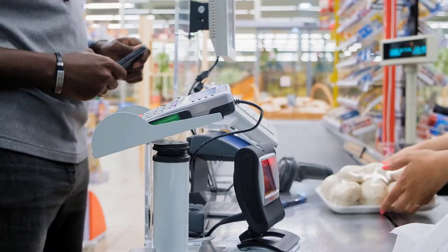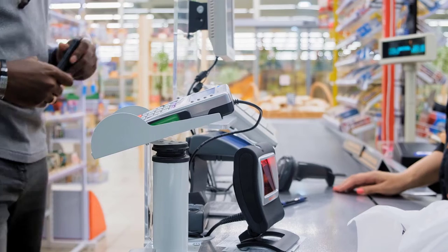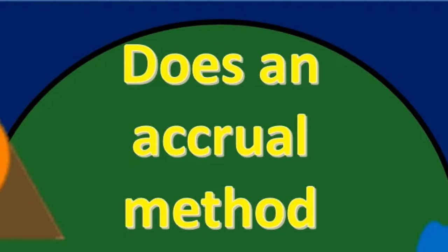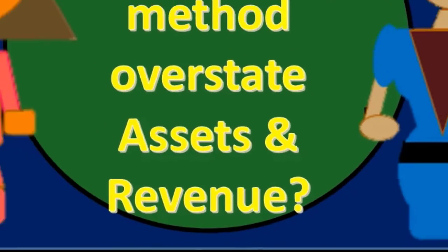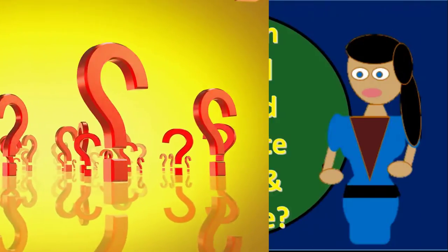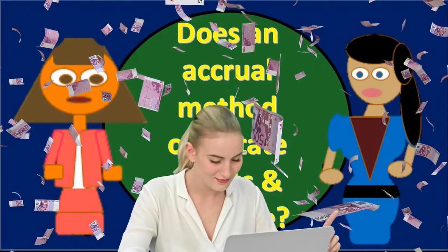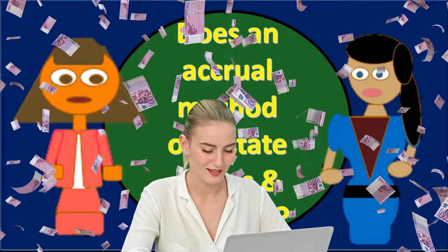In order to answer an essay question like this, we would first want to compare and contrast it to something. If we are asking the question of whether an accrual method overstates assets or revenue, we must compare or contrast it to something else — so we are going to compare it to a cash method. As we think about the two methods, we have to think about where they differ: the timing of when we record income statement accounts.